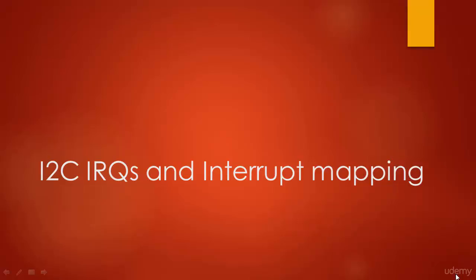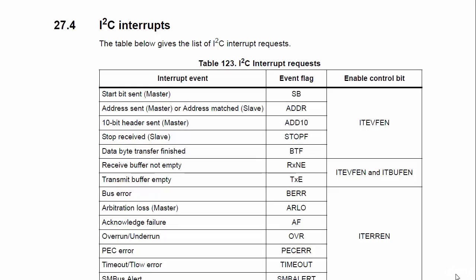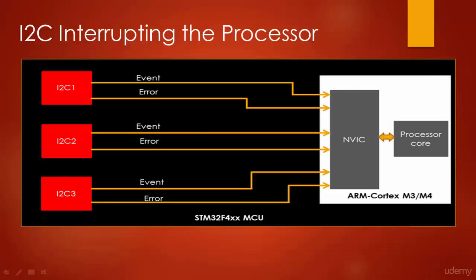In this lecture, let's talk about I2C interrupts and interrupt mapping. Let's refer to the reference manual to understand how I2C interrupts are delivered to the NVIC of the processor. Remember, all external peripheral interrupts must go via the NVIC to the processor core. This applies to every microcontroller — peripherals must deliver their interrupts to the processor via the NVIC.